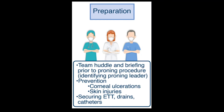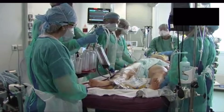Team huddle and briefing prior to proning: define each person's role and what they need to do. Take precautions for corneal ulcerations, skin injuries, and secure ET tubes, drains, and catheters. Take note of all major infusions, especially vasopressors. Use a checklist prior to proning. A team of at least 4 to 6 people is needed — more may be required if the patient is on ECMO or RRT.